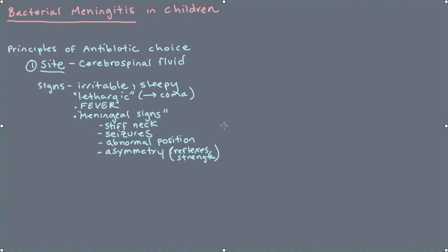We're talking about bacterial meningitis specifically. There are other types of organisms — non-bacteria — that can cause meningitis. The most prominent of those are viruses, causing viral meningitis, sometimes referred to as aseptic meningitis, which is actually more common than bacterial meningitis. There are also some parasites and fungi that can cause meningitis. The fungi and parasites are uncommon in the general population but may occur in patients who have an abnormal immune system.